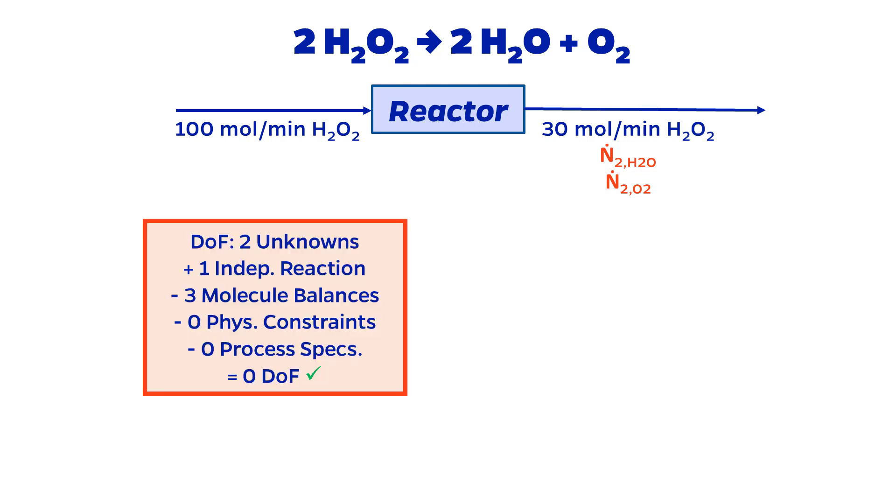It's a good idea to start as always with the degree of freedom analysis, which starts the same as usual by counting the number of unknowns. However, new to reactive processes, the extent to which the reactions proceed is another unknown variable.